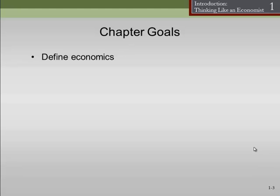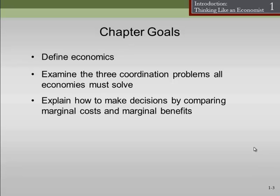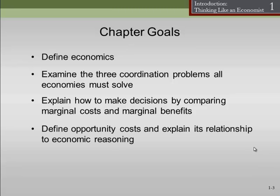The chapter goals: at the end of this chapter, you'll want to be able to define economics, which is actually kind of a tough thing to do, but we're going to try our best. Second, examine three coordination problems that all economies must solve. Third, explain how to make decisions by comparing marginal cost and marginal benefit — this will be a very important thing we'll use throughout the class. Fourth, define opportunity cost and explain its relationship to economic reasoning. Opportunity cost is probably one of the top 10 things I want you to remember 10 years from now, so this is a very important concept.